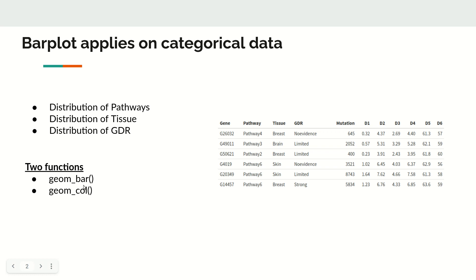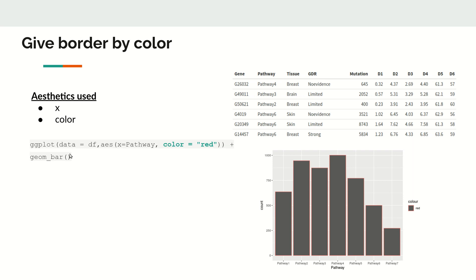ggplot provides two important functions: geom_bar and geom_col. These two are slightly different. The first, geom_bar, simply counts how many items exist for each level of a category. Whereas geom_col can be used to plot any kind of values on the y-axis — not just counts, but any other values.